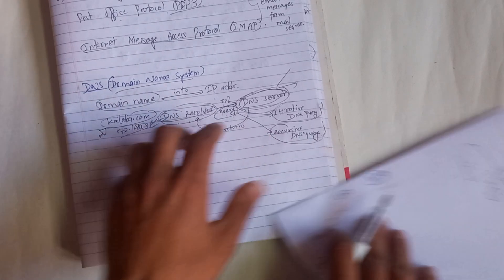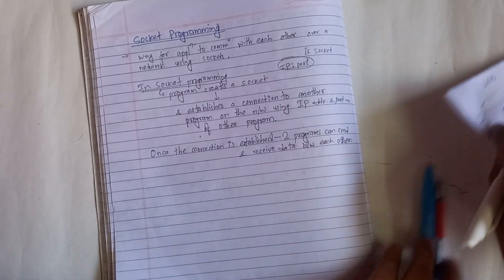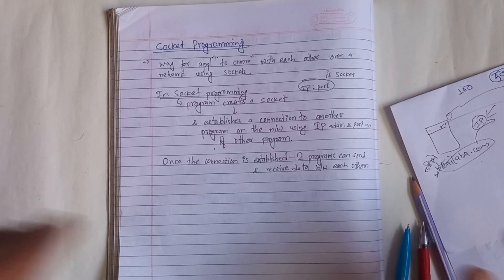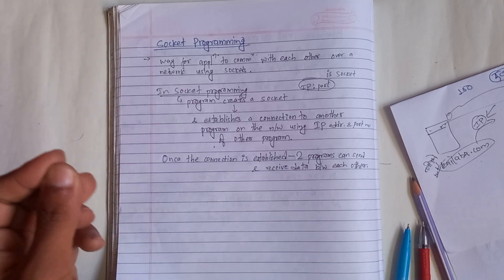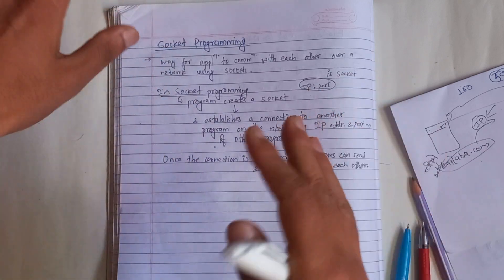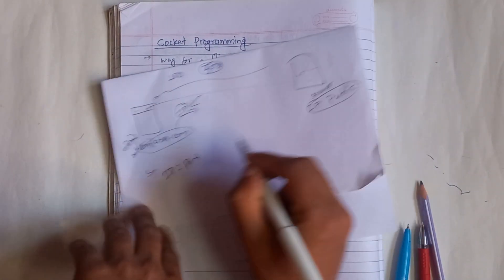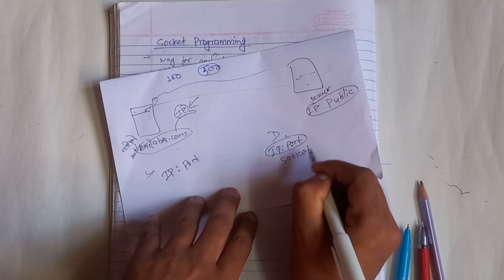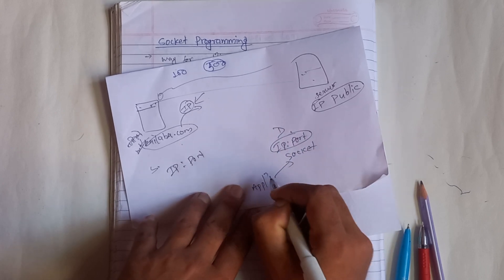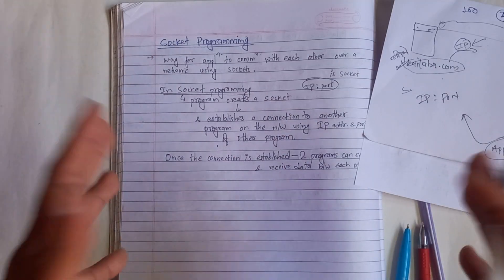Socket programming is a way for applications to communicate with each other over a network using sockets. A socket is used at the application layer. A socket address is defined at the transport layer — it is a combination of source IP, port and destination IP, port. Through your socket, you can access the application layer and direct application communication.